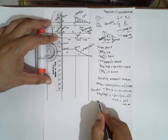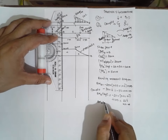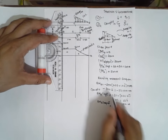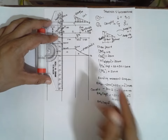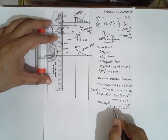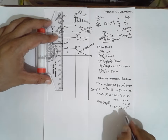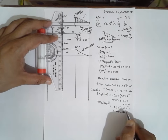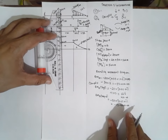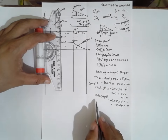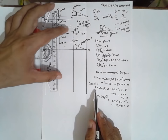BM at B right: minus 20 into distance (0.67 plus 1), without the couple, gives minus 13.4 kilonewton meter. So on the same line of B we have two values: 66.6 kilonewton meter (left) and minus 13.4 kilonewton meter (right).